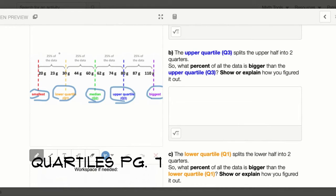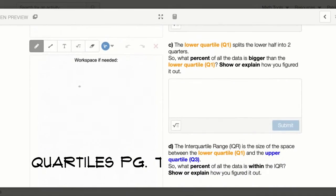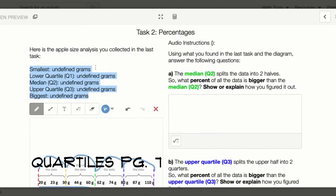You can also notice that this section right here is 25% of the data. This section right here is also 25% of the data, and so on. And you can see the apple sizes right here. Your workspace is right here if you need it. And now let's answer some questions using what you found in the last task and the diagram. Answer the following questions.